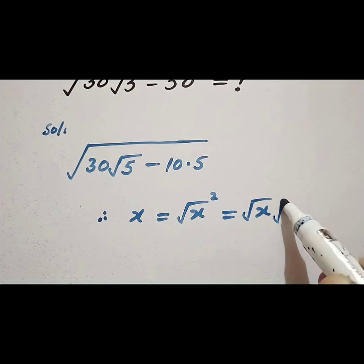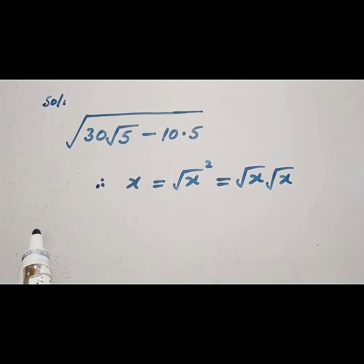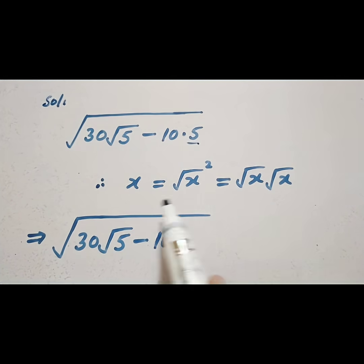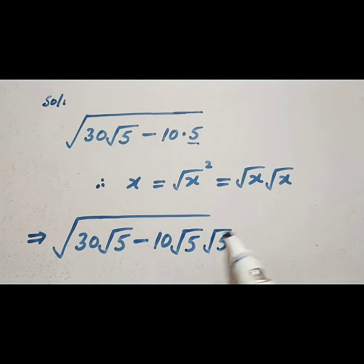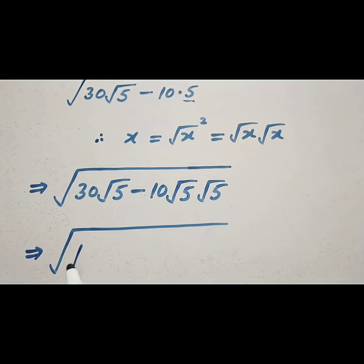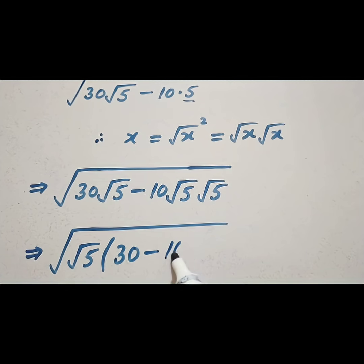This implies square root of 30 into square root of 5 minus 10. Now this 5 can be written as square root of 5 multiplied by square root of 5. So we can take square root of 5 as common, giving us square root of 5 times the quantity 30 minus 10, into square root of 5.